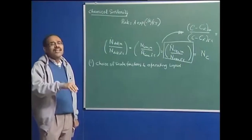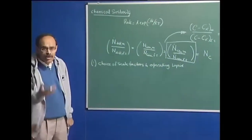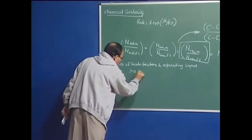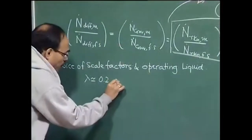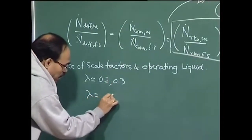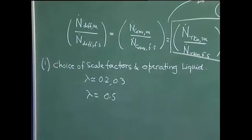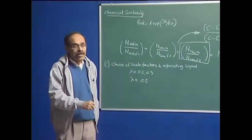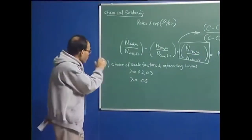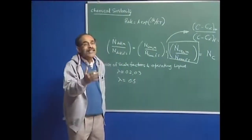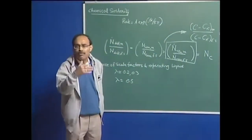Whether to go for a small scale model or a relatively bigger scale model — by small scale I mean lambda values of the order of 0.2 to 0.3, by relatively bigger scale I mean a scale factor of about 0.5. In selecting the scale factor, one important thing is that we must not disturb or misrepresent the flow regimes. For example, in ladles or tundishes the flow is turbulent.